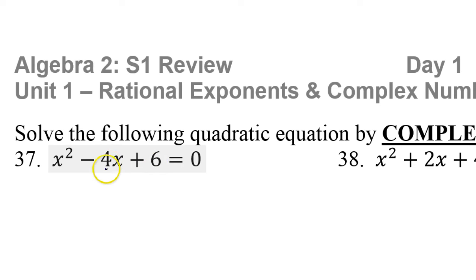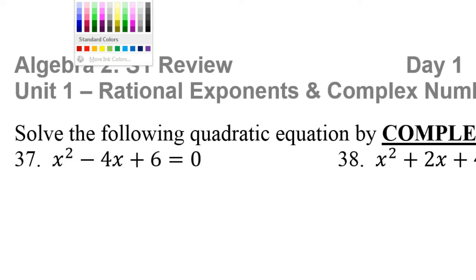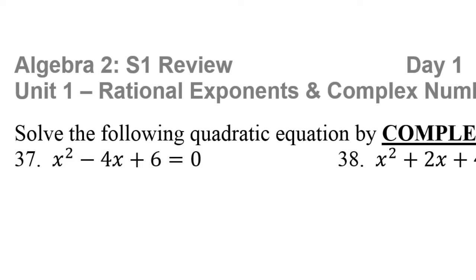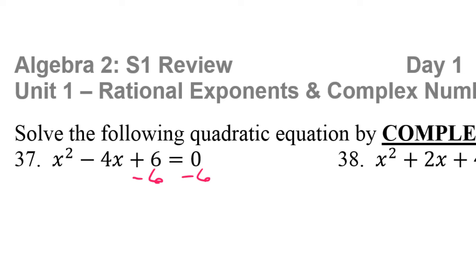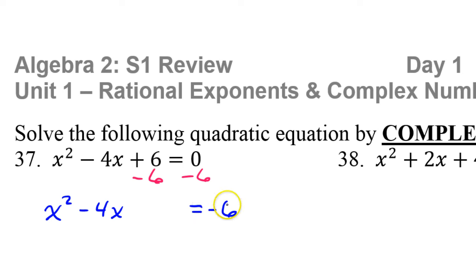Half of 4 is 2, and 2 squared is 4. This is not a 4, so this is not the number we need — these are not the droids you're looking for. So we're going to have to subtract 6 from both sides just to move it out of the way. That is going to give us x squared minus 4x. Leave a space here for the number we're going to put in later, but that's going to equal negative 6.